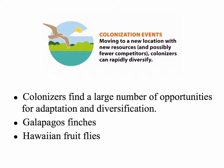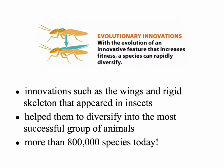Colonization events can also lead to adaptive radiations. This happens when colonizers find a large number of opportunities for adaptation and diversification. We've seen this in the Galapagos finches and in Hawaii with different groups such as fruit flies or birds. When a new organism arrives in a new location, this founding population has an abundant amount of resources available to them, allowing for adaptive radiation and differentiation of different parts of the population to specialize on certain resources.